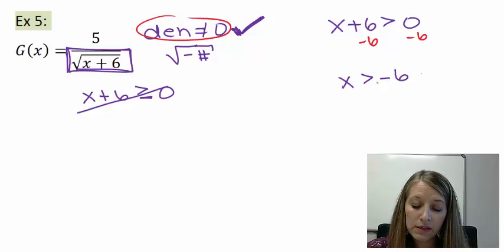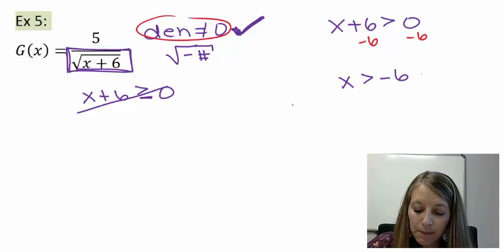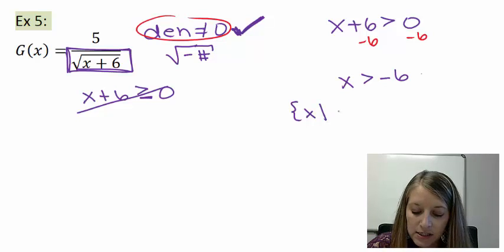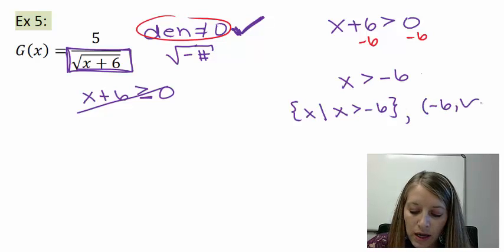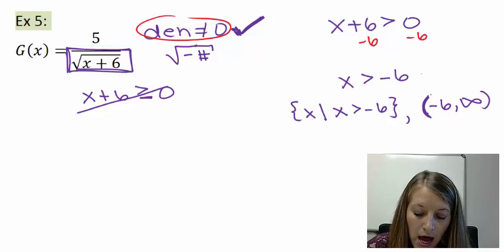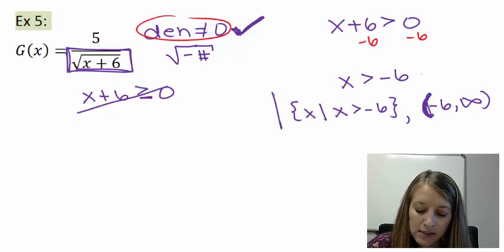That should take care of both of these issues. In set builder notation, the set of x is such that x is larger than negative 6. Just substitute it into the blank. In interval notation, I have negative 6 or anything larger, but not including negative 6 itself.